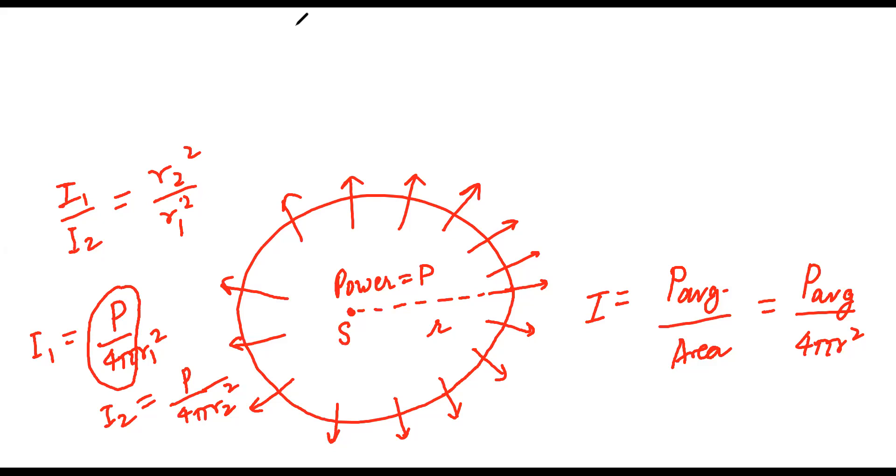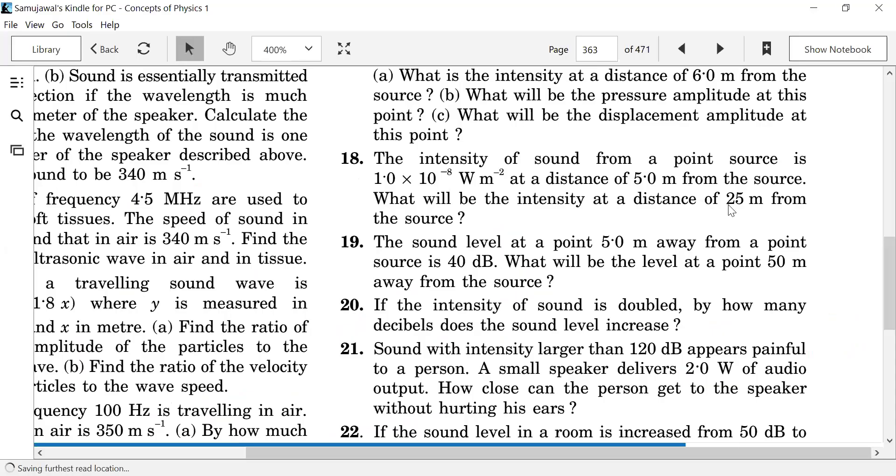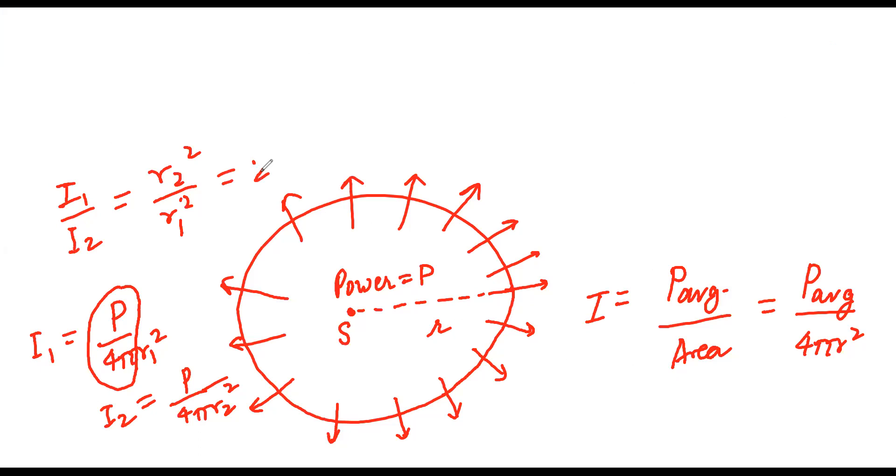R₂ is 5 times R₁. So I₂'s value - I₂ is equal to I₁ by 25.